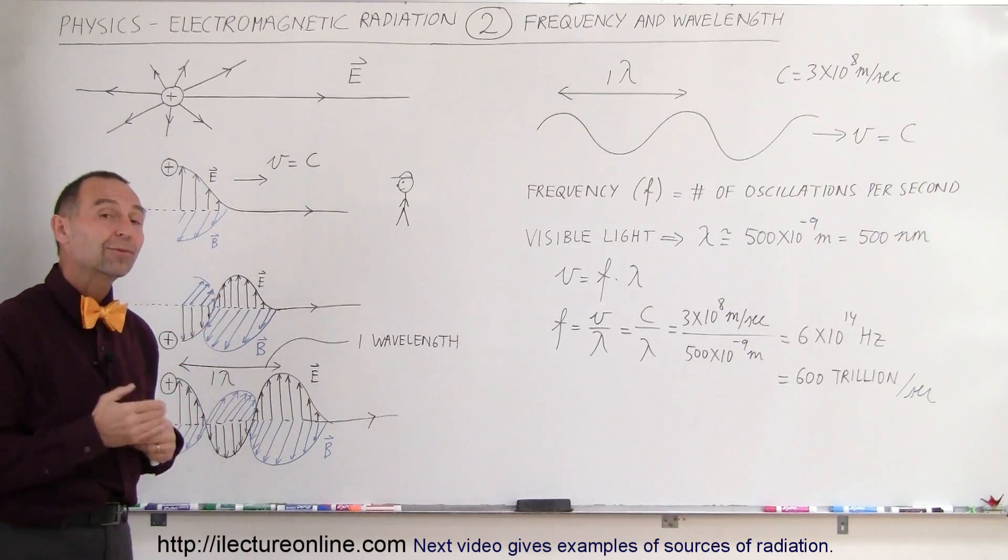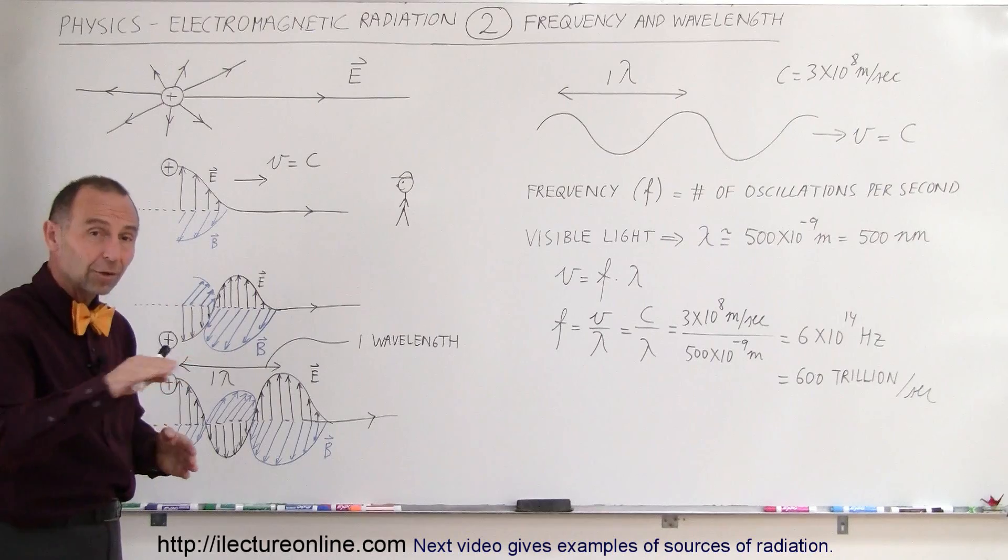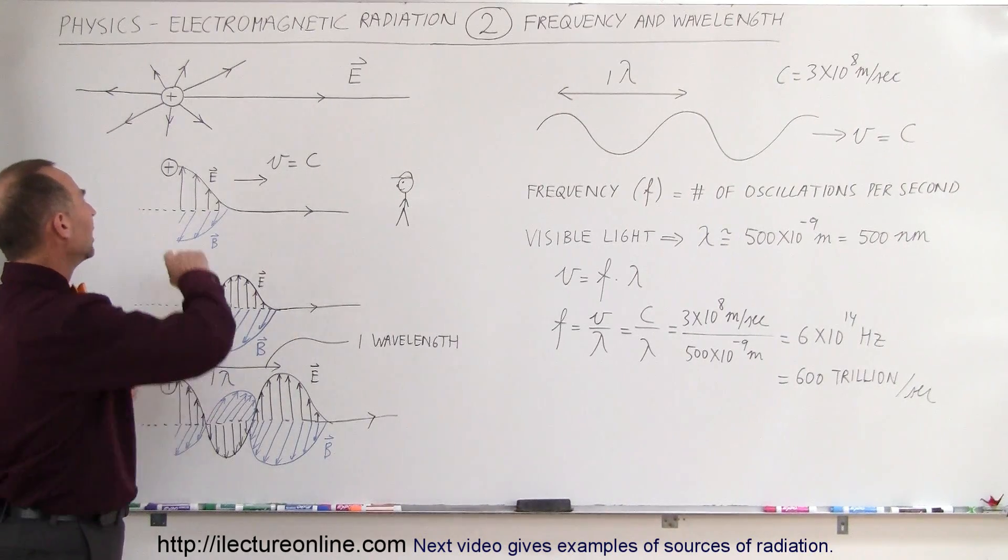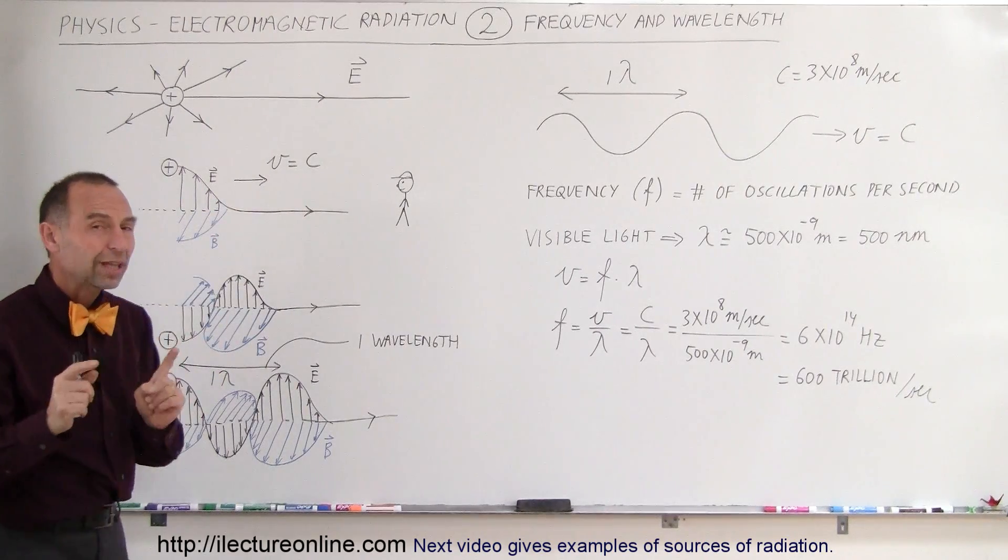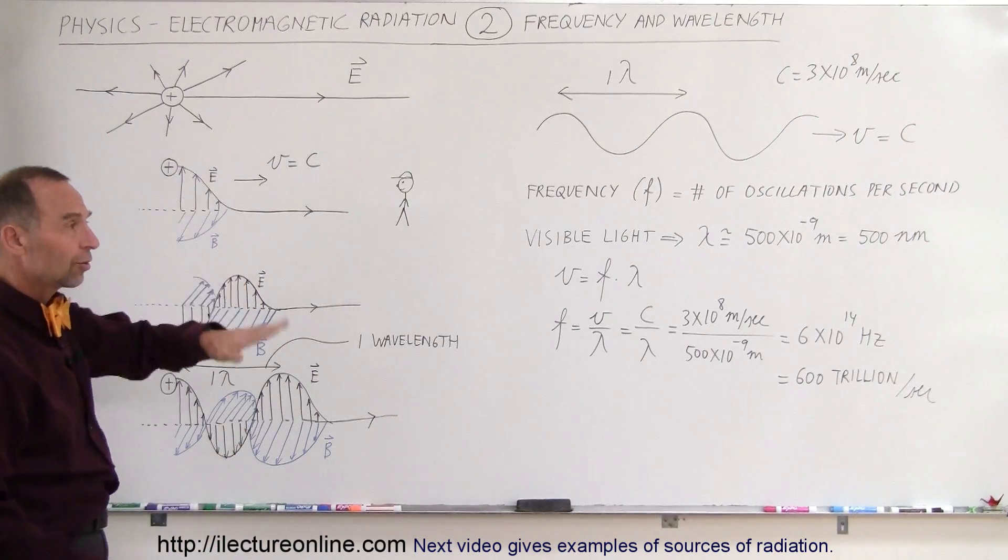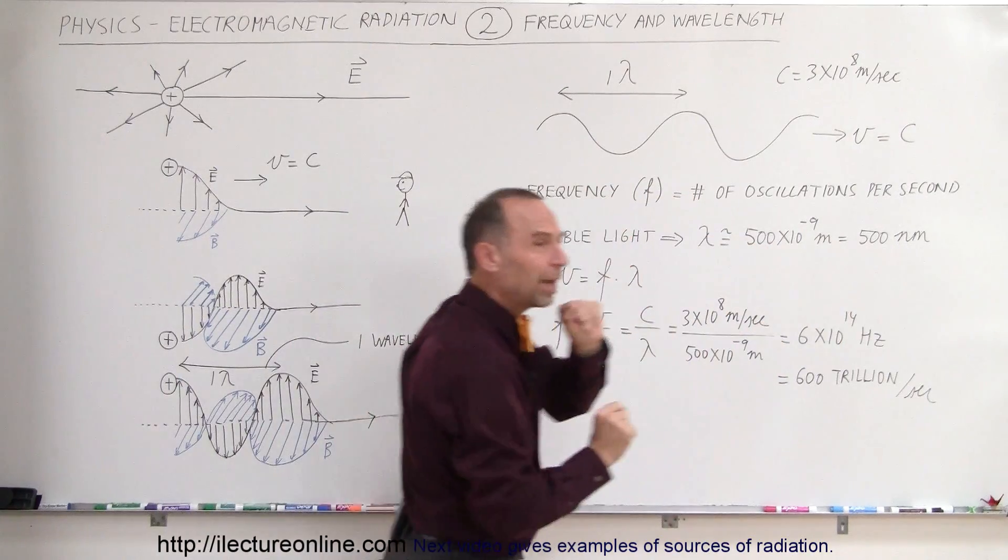Again, remember the enormous number of times per second that the field, the electric field and the magnetic field will go up and down or sideways like this. Now, not to be misunderstood, even though we draw the electric field like this and the magnetic field like this, we know that the magnetic field and the electric field are always perpendicular to each other. So as the electric field goes like this, the magnetic field goes like this, and that's how electromagnetic radiation goes through space.